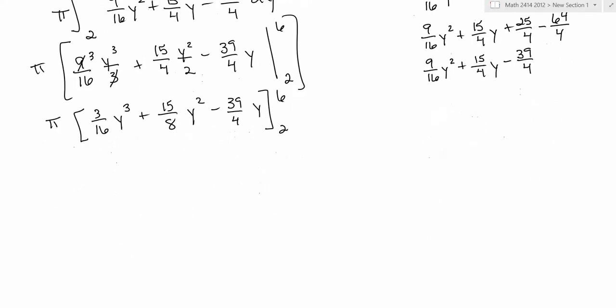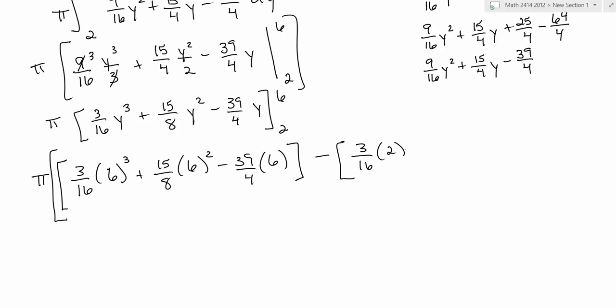So applying the fundamental theorem, you're going to plug the 6 in, and then you plug the 2 in, and you subtract them, and so pay attention to some of the snazzy arithmetic that I do here. So I'm going to have 3 sixteenths and then 6 cubed plus 15 eighths times 6 squared minus 39 fourths times 6, and that's going to be subtracting, remember this whole thing is multiplied by pi, now I'm going to put 2 in, so it's 3 sixteenths times 2 cubed plus 15 eighths times 2 squared minus 39 fourths times 2.